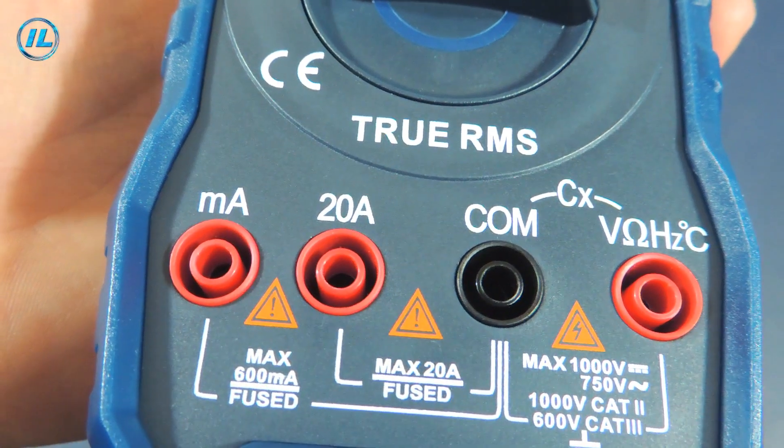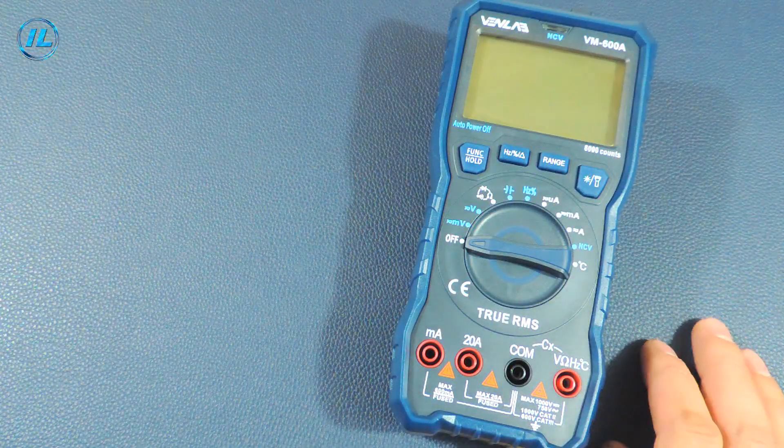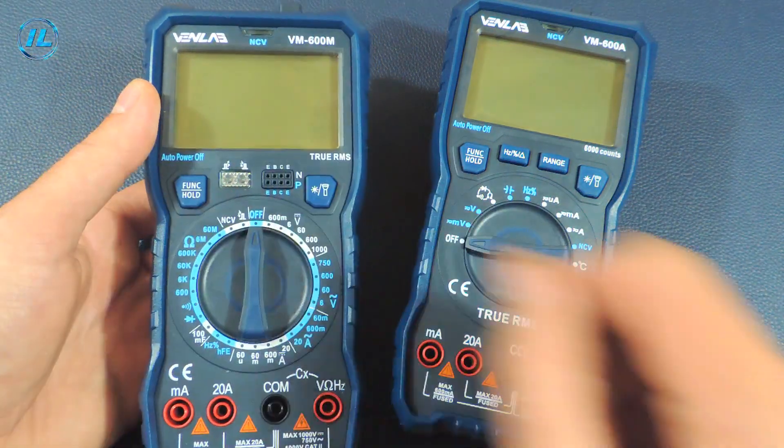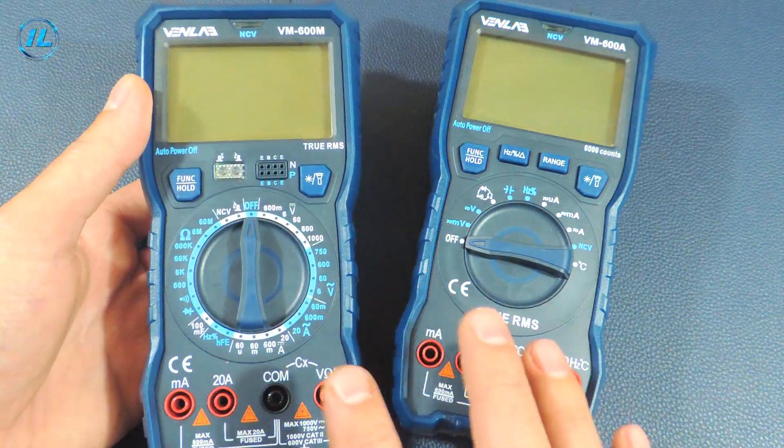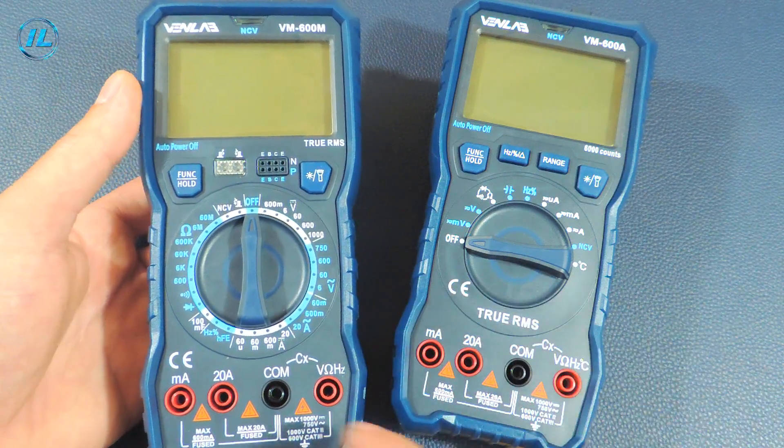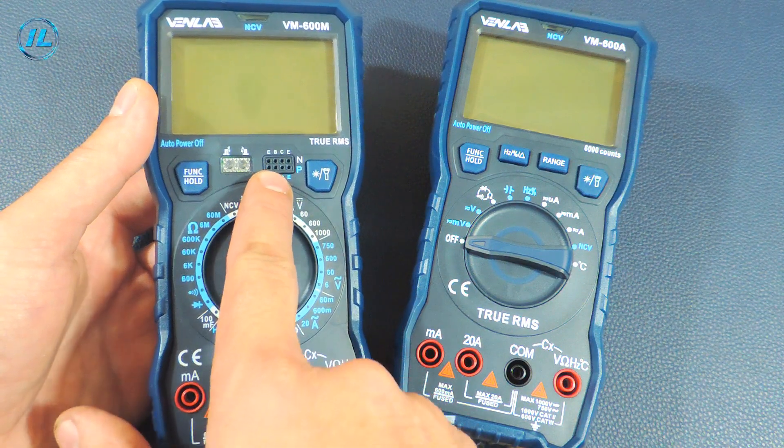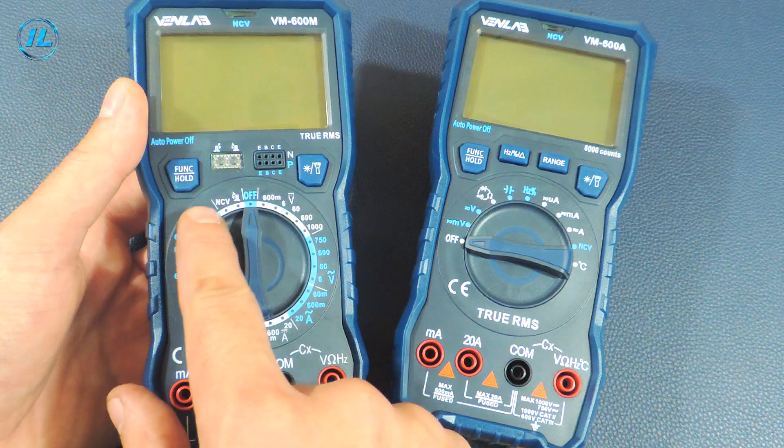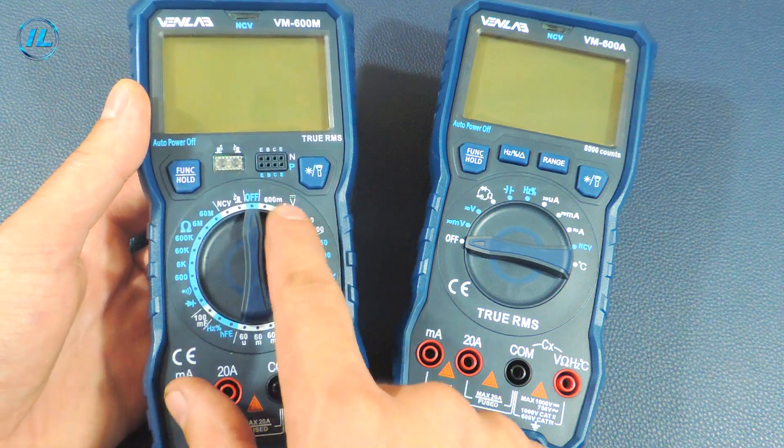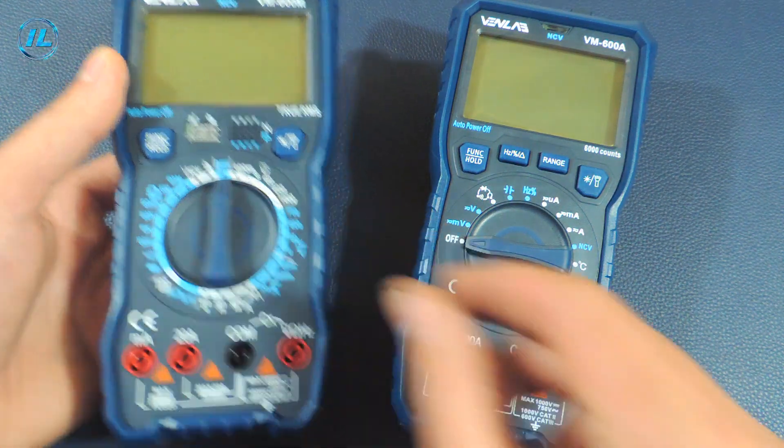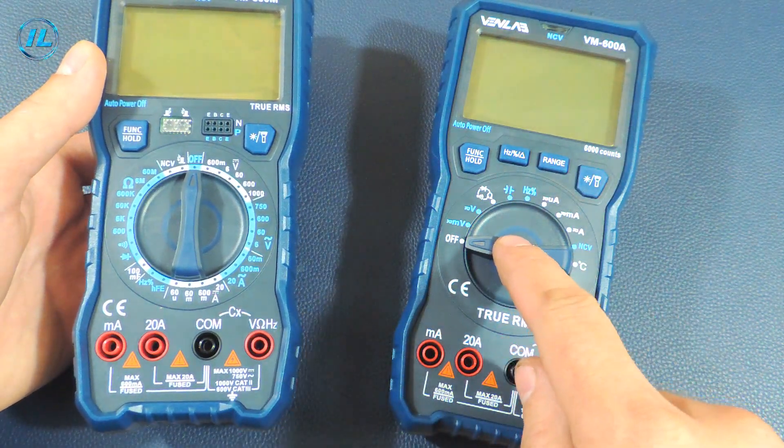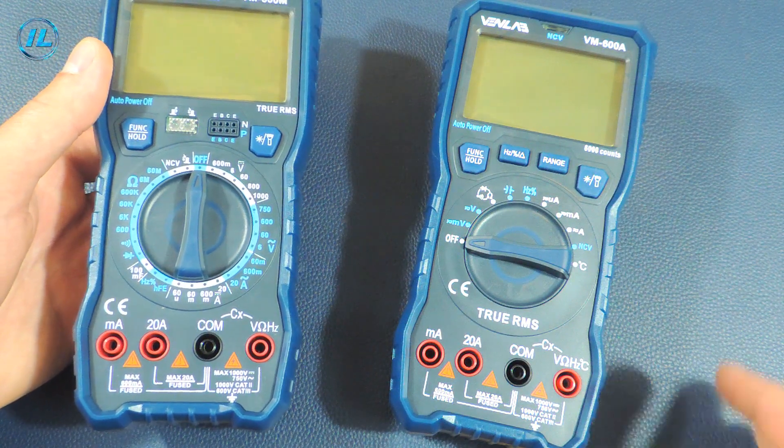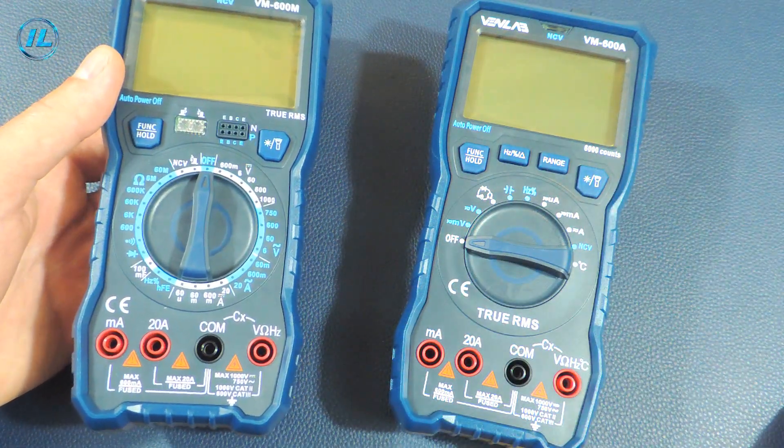In one of the last videos I did a review on a very similar device. It was a VM 600M multimeter. Outwardly they are very similar but there are some differences. So for example, this multimeter can measure the gain of transistors and record infrared radiation, but at the same time it is necessary to manually set the measurement range. And this multimeter is semi-automatic, that is it is enough to set the desired measurement mode and then the multimeter will do everything by itself. And now let's take a closer look at the capabilities of this multimeter VM 600A.